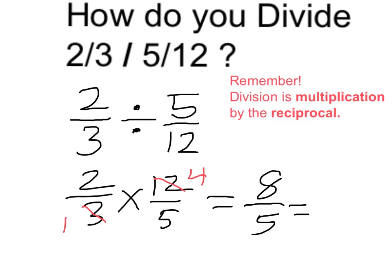So that's equal to 8 fifths. And if I now make that into a mixed number, 5 goes into 8 one full time, and then I have 3 over 5 left over.